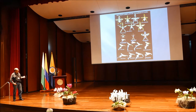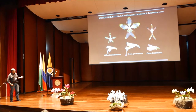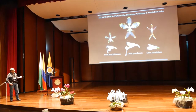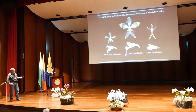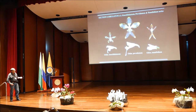Odontoglossum combinatum, known from Colombia, has the yellow lobes on the column, so it's a good member of this group, and DNA proves that. But it doesn't have the hood. DNA shows it belongs there nonetheless.